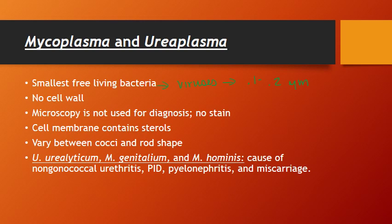As mentioned, these organisms don't have a cell wall. They do have a cell membrane, and their cell membrane contains sterols, which is also a little different. This means something really important from a treatment standpoint: without a cell wall you cannot treat them with cell wall inhibitors — they won't even care. That means no penicillin, no vancomycin, no cephalosporins. They don't notice it because they have no penicillin binding proteins to make those work.